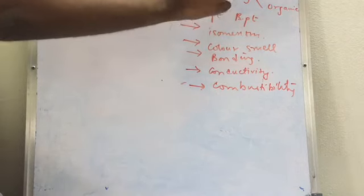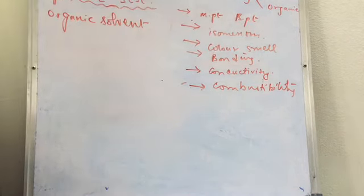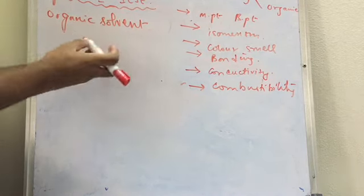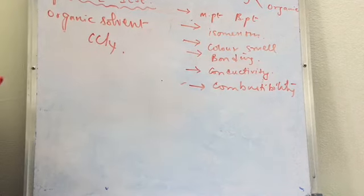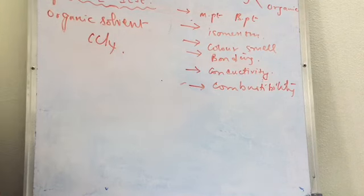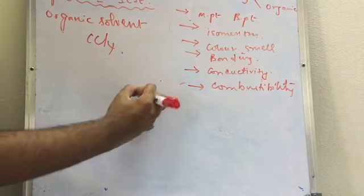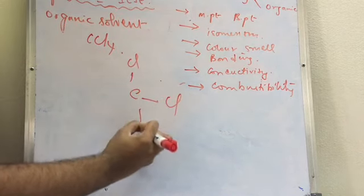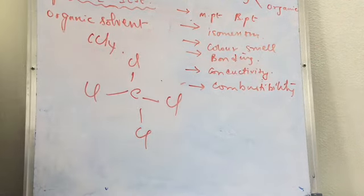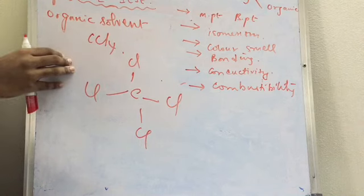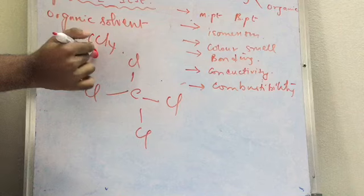Now, solubility in organic solvents. As I said, like dissolves like. Organic compounds like methane, ethane, or propane have the same bonding as organic solvents like CCl4, so they are soluble in CCl4. The basic structure of CCl4, which you might have done in the chemical bonding chapter, has one carbon and four chlorine atoms. This compound — carbon tetrachloride — is most widely used in labs as an organic solvent. Any other organic compound can be stored using this solvent.